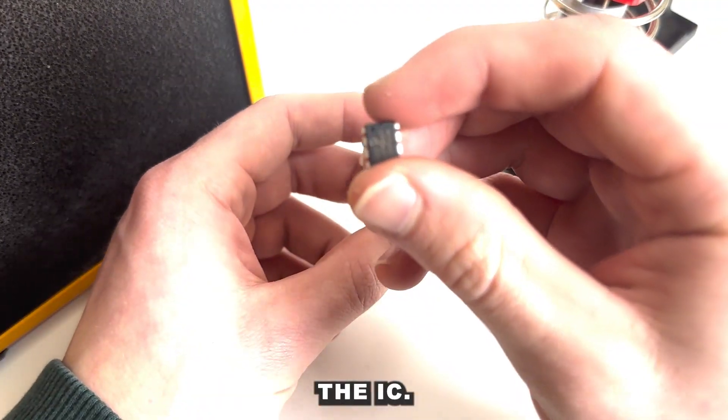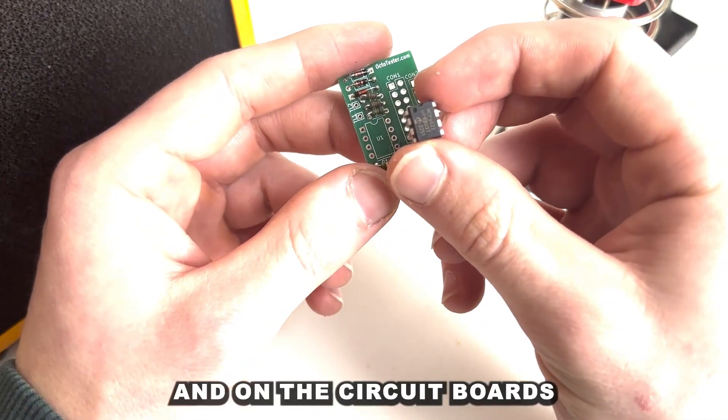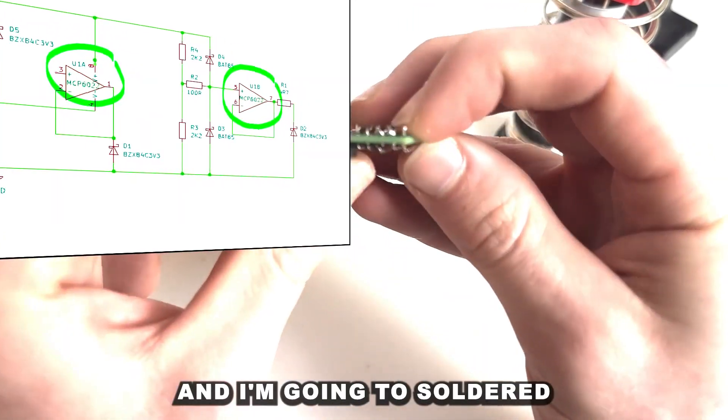And next I'm going to grab the IC. You should see a half circle and a dot. Make sure that both semi-circle on the IC and on the circuit board are matching in orientation. It's going to lead to damage with the IC. And again I'm going to solder the IC.